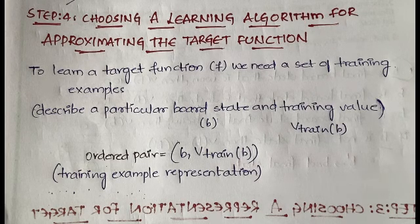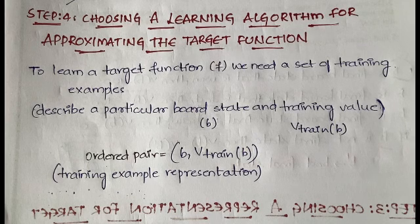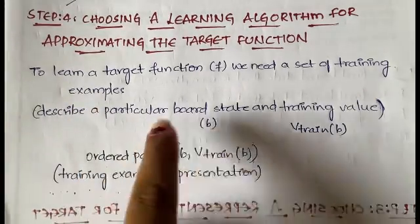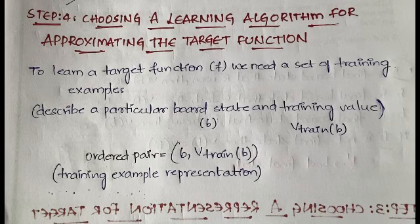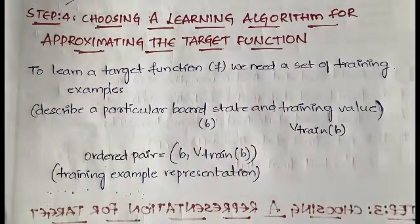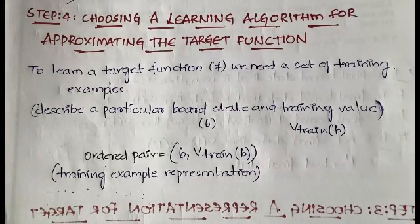In order to learn a target function you need some training examples. These training examples will describe a particular board state — whether the board is in a winning state or a losing state. The training value is represented by v_train(b).